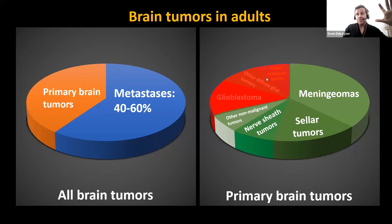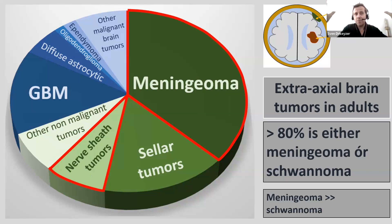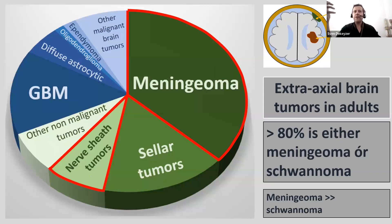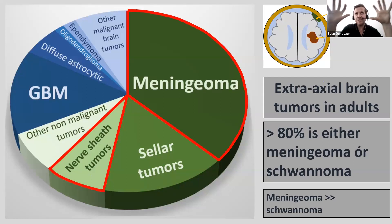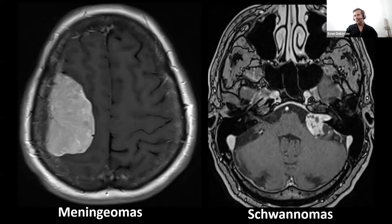Now let's move on to benign brain tumors: meningiomas, sellar tumors, and nerve sheath tumors. Let's start with meningiomas and nerve sheath tumors — extra-axial brain tumors located outside the brain parenchyma. If you see an extra-axial brain tumor in an adult patient, you have about 80% chance it's going to be a meningioma or a schwannoma. Meningioma is the most frequent of the two.